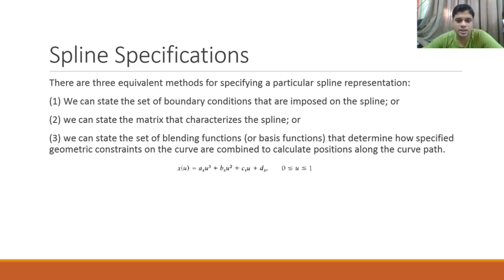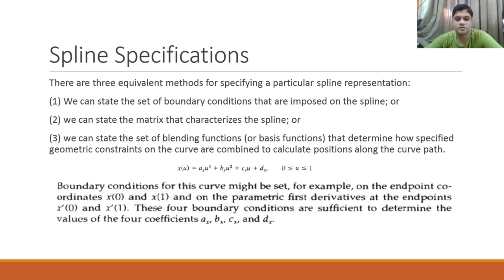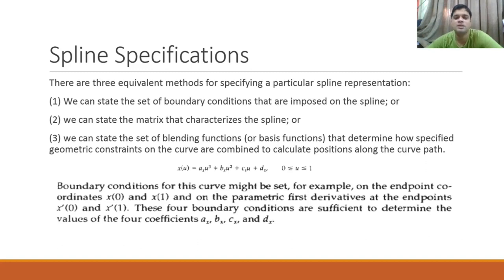We have the equation x(u) = ax·u³ + bx·u² + cx·u + dx, where u is a parameter varying between 0 and 1 — that is why it is called a parametric representation. Boundary conditions for this curve might be set on the endpoint coordinates x(0) and x(1), and on the parametric first derivatives at the endpoints x'(0) and x'(1). Since it is a cubic equation, it defines four control points.